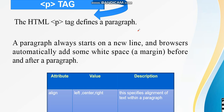Now let's see another tag — the paragraph tag. The P tag defines a paragraph. A paragraph always starts on a new line, and the browser automatically adds some white space or a margin before and after a paragraph. The attribute for this tag is 'align', with values left, center, and right, which specifies the alignment of text within a paragraph.